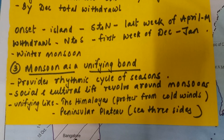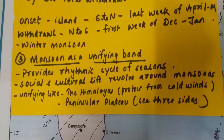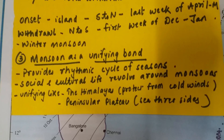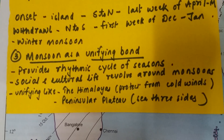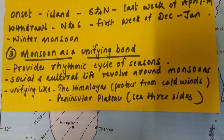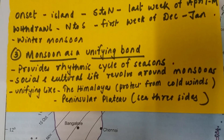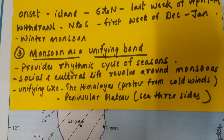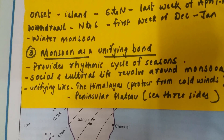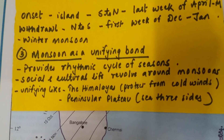How can monsoon be seen as a unifying bond — something that unites us? Some places get so much rainfall, some get less, and some people are not dependent on monsoons at all. The answer is that it provides a rhythmic cycle of seasons. If there were no monsoons, we would not have the regular four seasons every year. Many countries do not have such seasonality. It is because of monsoon that we know summer has stopped, rainy season has begun, rainy season has stopped, and winter has started — monsoon becomes the marker of the four seasons.